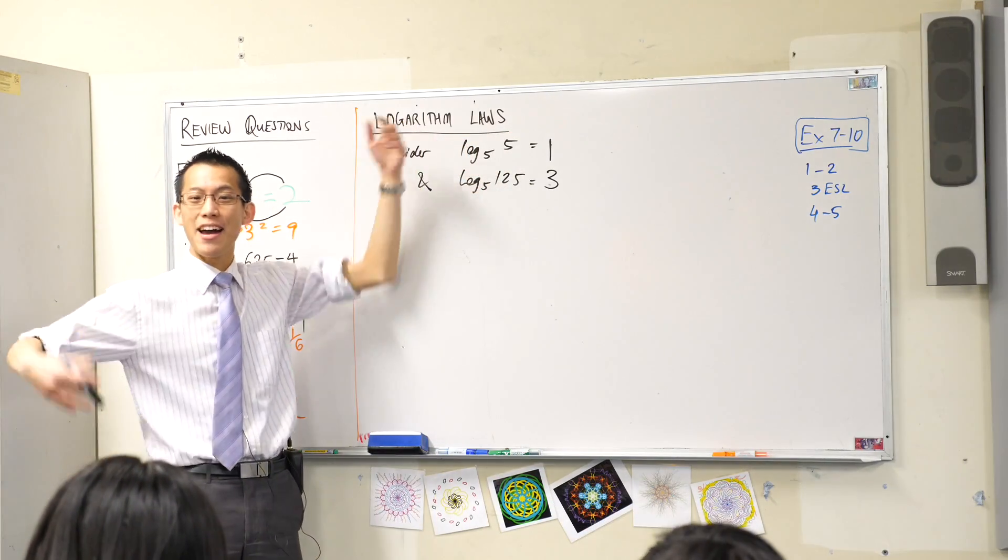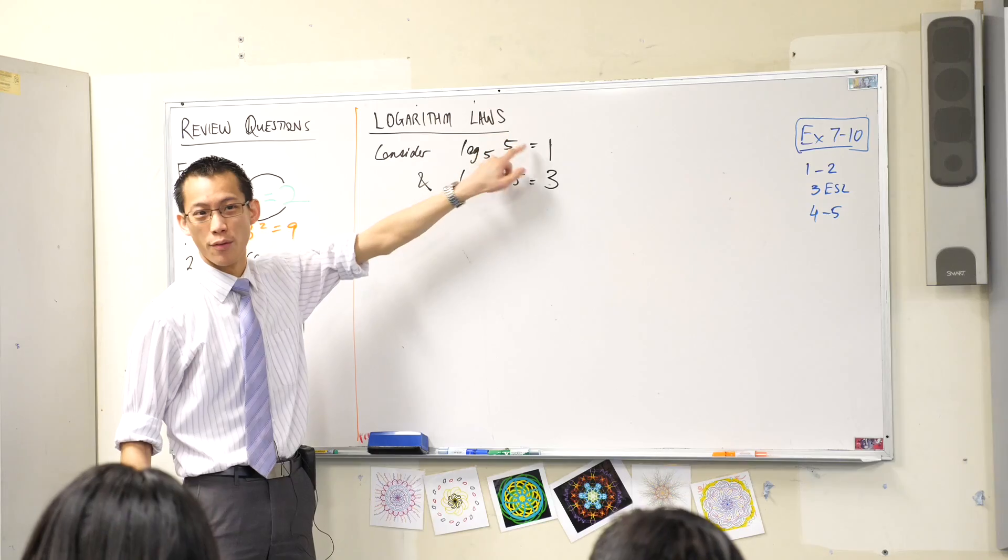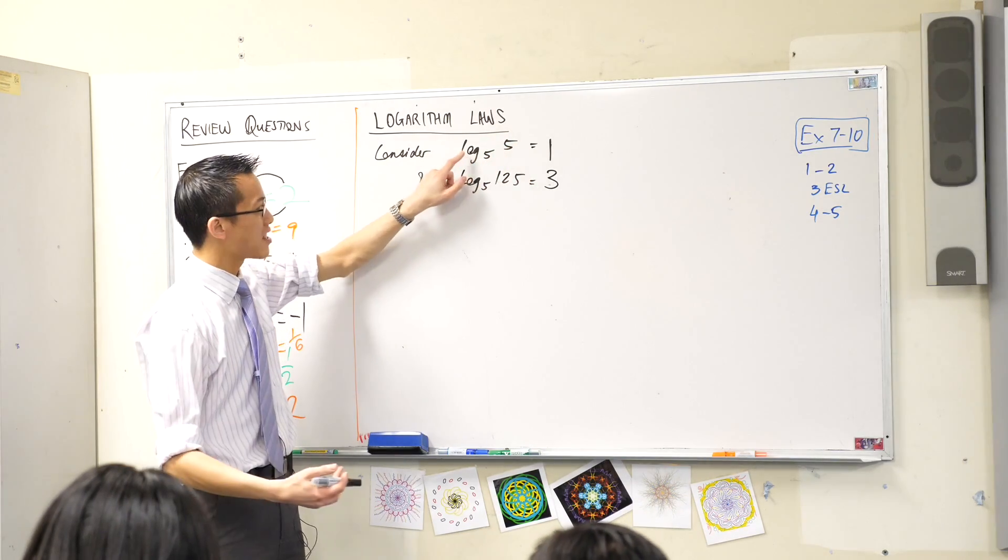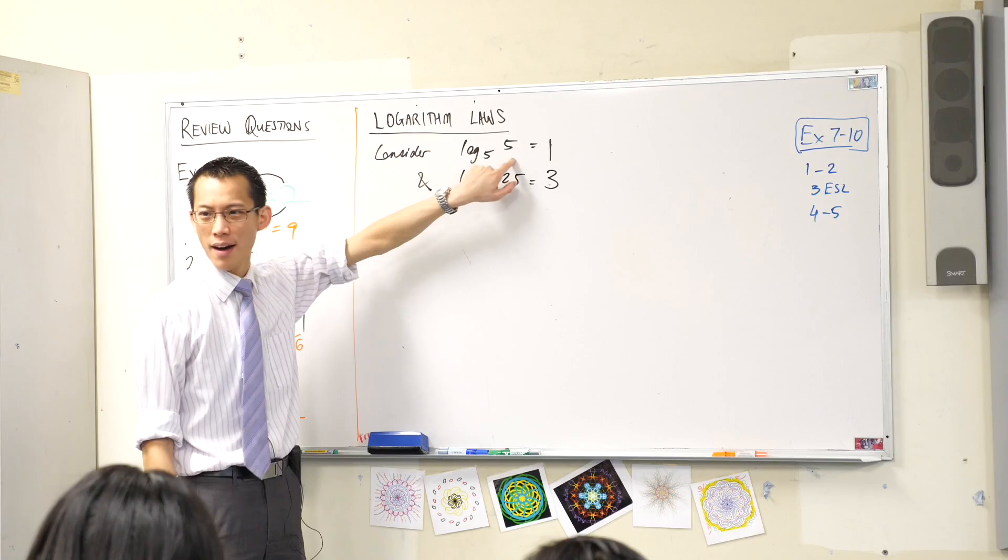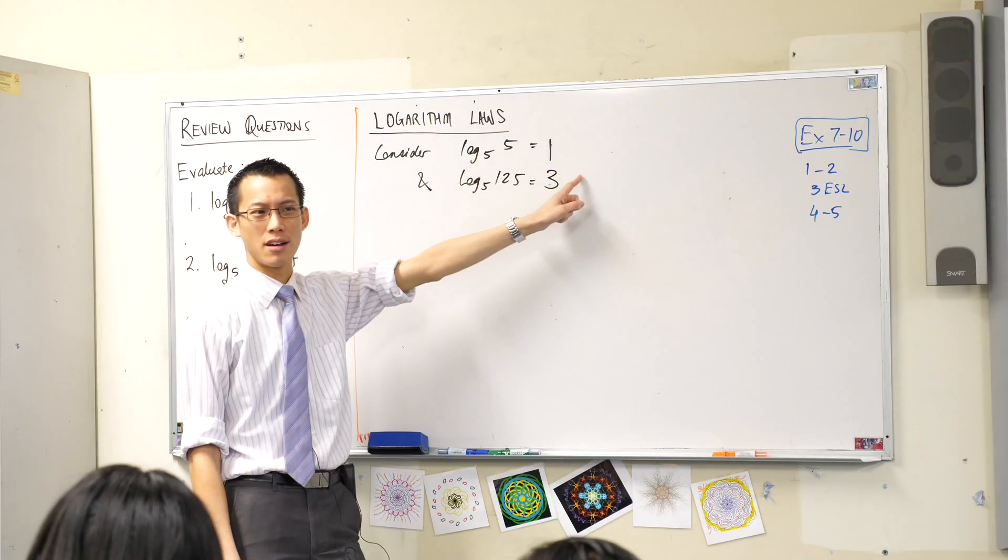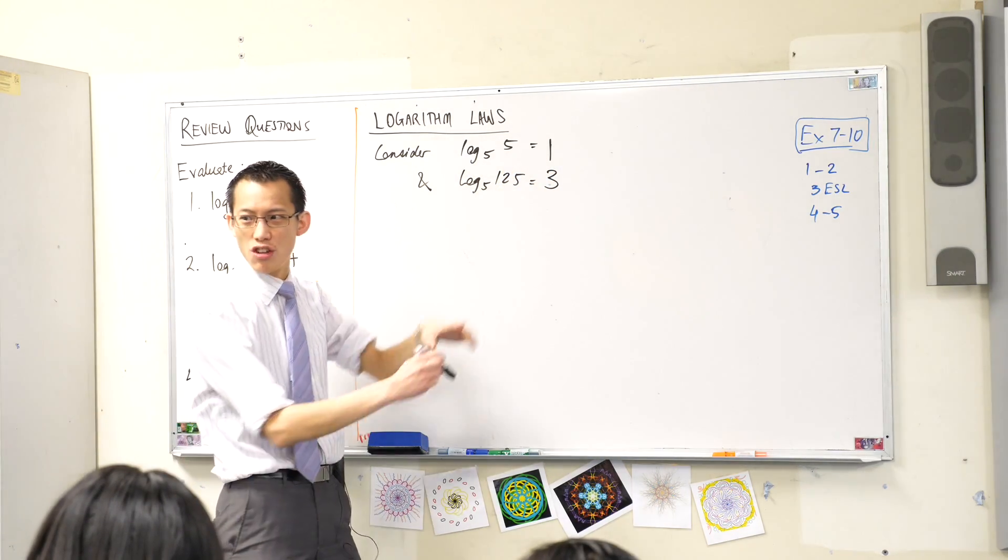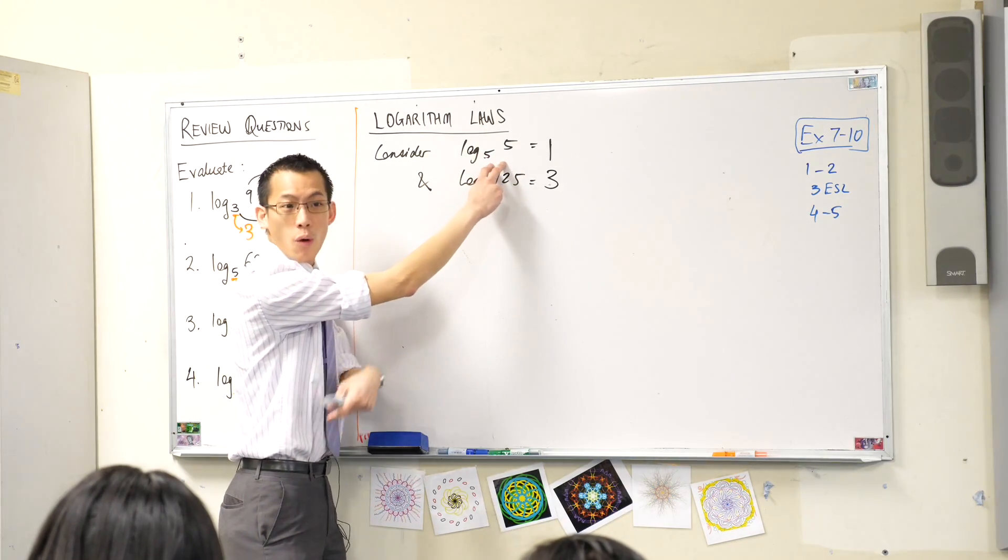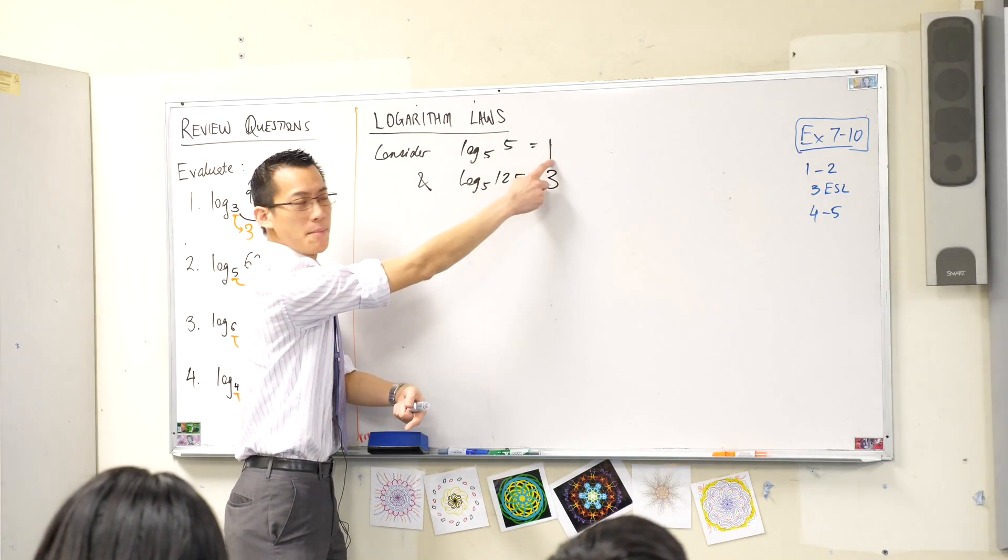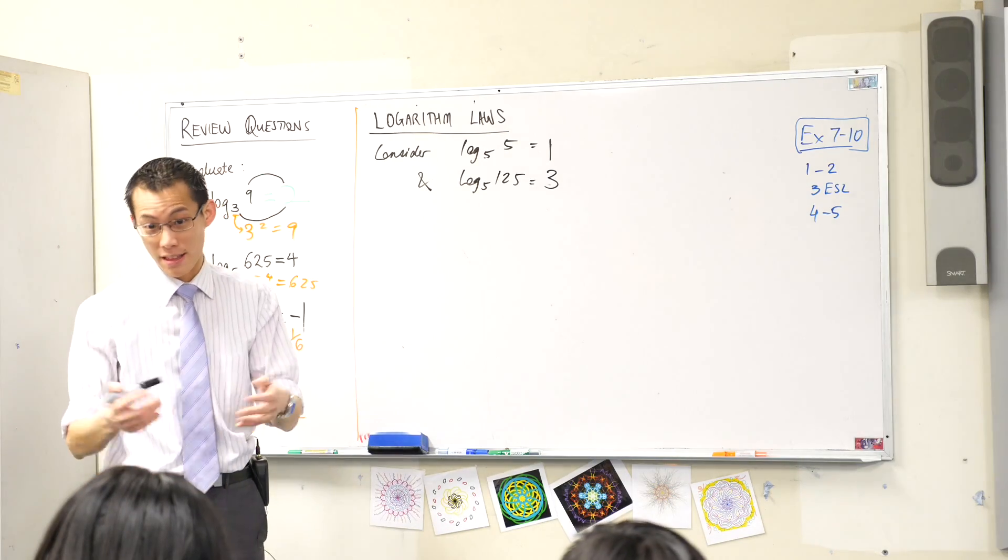If I hadn't written 5, if I'd written say log base 4 of 4 or log base 100 of 100 or log base pi of pi, how would that change the answer? It won't change. No matter what numbers you put in here, if they're the same number, you always get 1 because that's the power you raise to to get the same number.